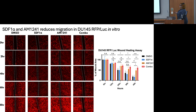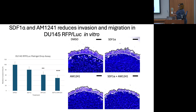Our in vitro scratch wound assay used DMSO as a control, SDF-1-alpha to activate CXCR4, AM1241 to activate cannabinoid receptor 2, and then the combination treatment of SDF-1-alpha and AM1241 to form the heterodimer model. Over the course of 48 hours, at 12-hour intervals, we took images. We could see as early as 24 hours a significant difference between the DMSO group and the combination treatment group. At approximately 48 hours, there was significant difference between the DMSO group and the combination treatment, as well as SDF-1-alpha. With the Matrigel drop assay, measuring the relative invasion area, the combination treatment group significantly reduced the relative area of invaded cells, and AM1241 alone had that same effect as well.